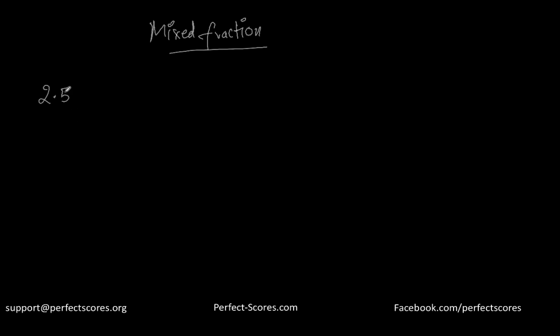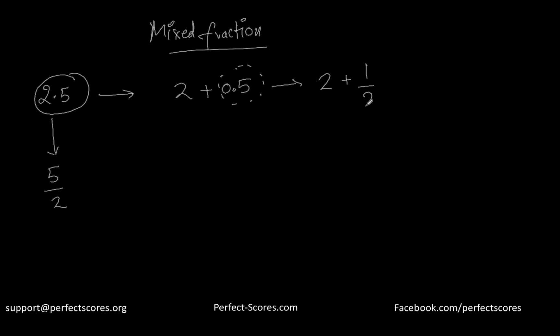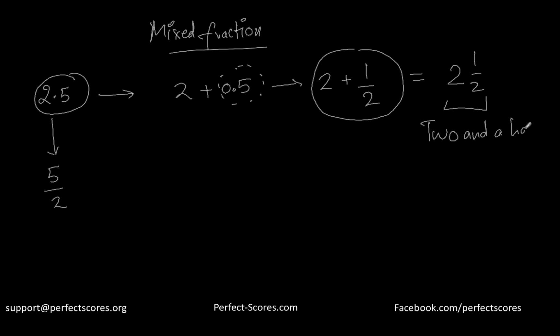If you watched the previous fractions video, we talked about what a fraction is, how to add fractions, and how to subtract fractions. In this video, I'm going to talk about mixed fractions. For example, the number 2.5 can be written as 5 by 2, but 2.5 can also be written as 2 plus 0.5, or in terms of fractions, 2 plus 1 by 2. The way we denote this is '2 and 1/2' — that's what we call a mixed fraction.